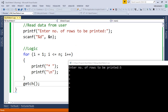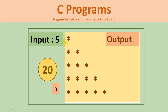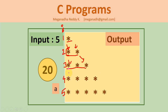Going back to the requirement: when i is 1, we need to print only one star. When i is 2, we need to print two stars. When i is 3, three stars. So for each row, we need to loop from 1 to i — one time when i is 1, twice when i is 2, up to five times when i is 5. We need to use an inner loop.